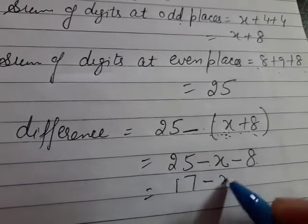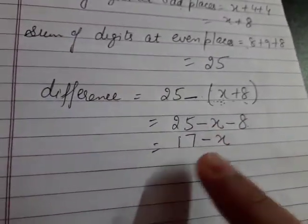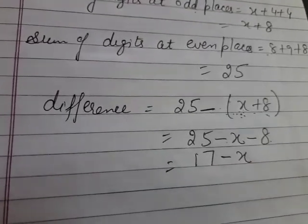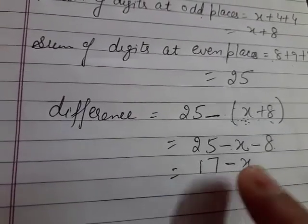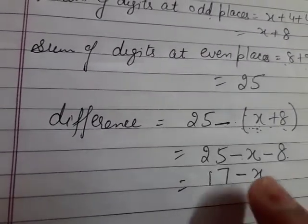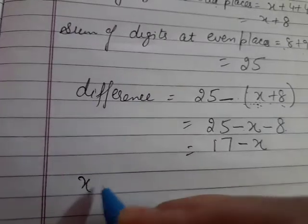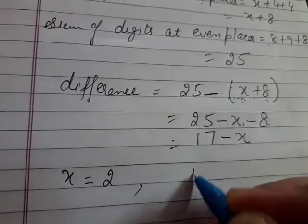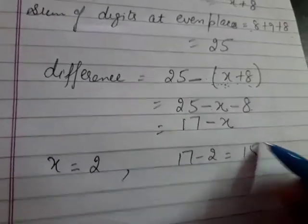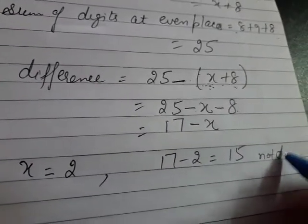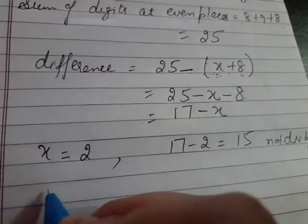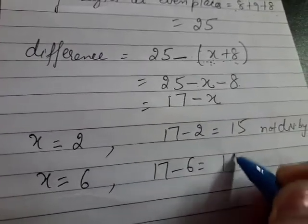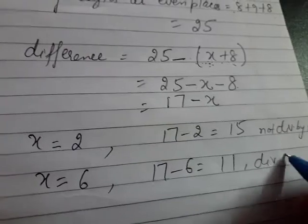Now what do we have here? From 17, what should we subtract so that our answer, which is the difference, becomes divisible by 11? So which number less than 17 comes in the 11 table? That is 11. So it means, in place of x, what should we put? Suppose we put 2 in place of x. 17 minus 2, how much is that? 15. So this is not divisible by 11. Then in place of x, what do we put? 6. 17 minus 6, how much is that? 11. Divisible by 11.